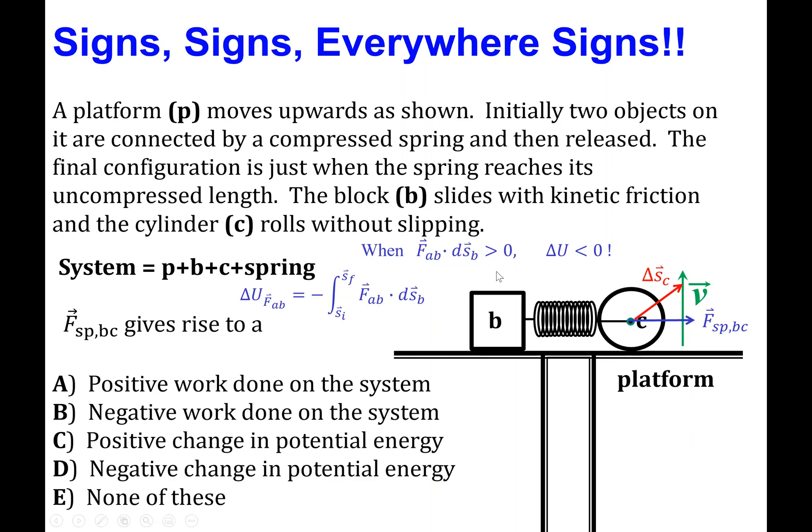So finally, we can make our decision based on that. So indeed, this quantity here is always going to be positive throughout the path integral, and therefore the total change in potential energy is negative.